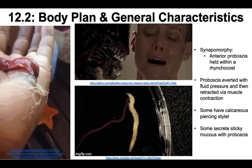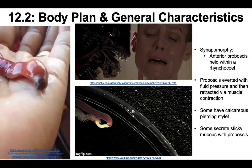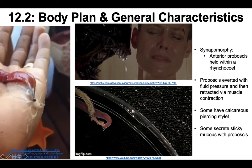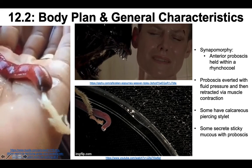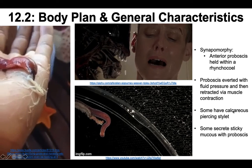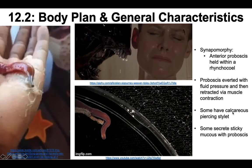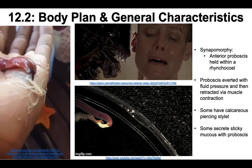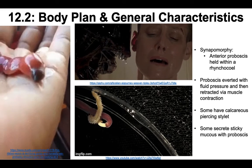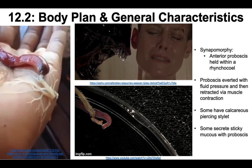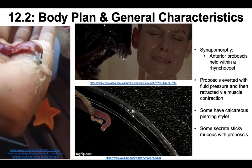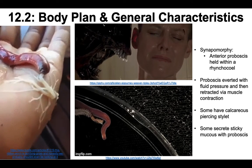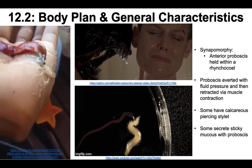Some of them have a piercing stylet at the end of their tongue — basically a tongue with a razor blade on the end. That stylet is made of calcium, which is why it's called a calcareous piercing stylet. Some of them will just secrete a sticky mucus with their proboscis to trap prey.